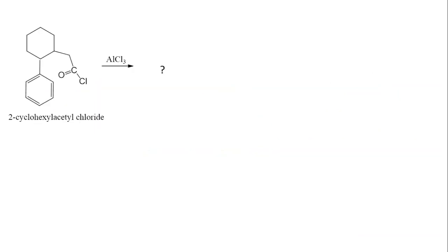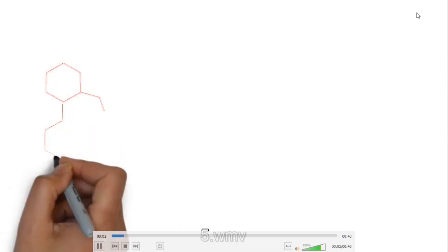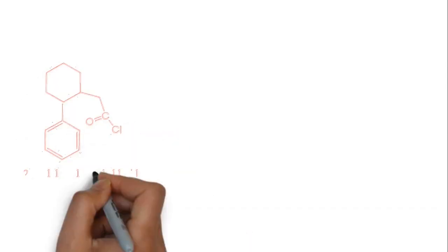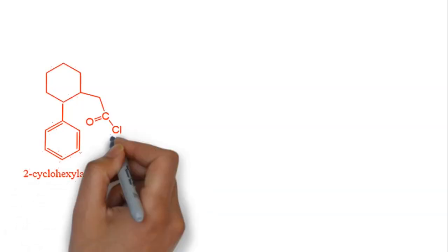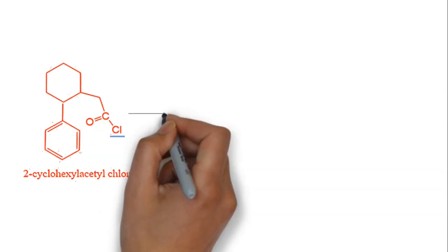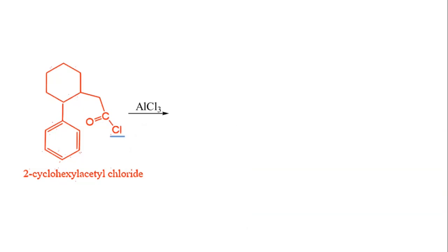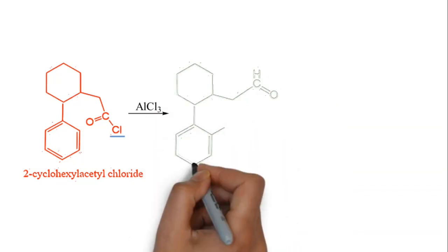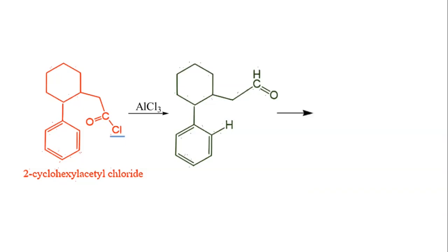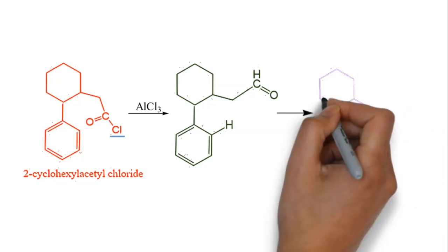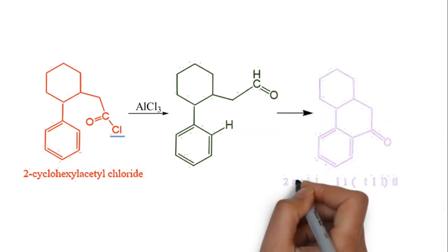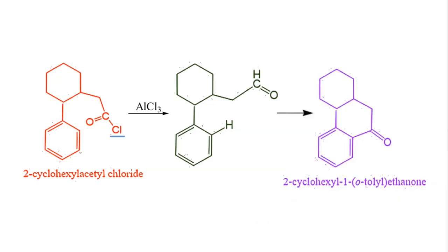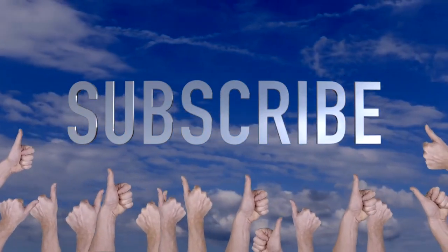Now let us take the reactant 2-cyclohexylacetyl chloride. In the presence of AlCl3, what will be the product? On removing Cl⁻ in the presence of AlCl3, the Friedel-Crafts reaction gives an intermediate: 2-cyclohexylacetaldehyde. This on intramolecular cyclization gives a 6-membered ring ketone.